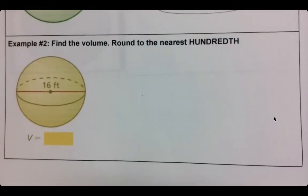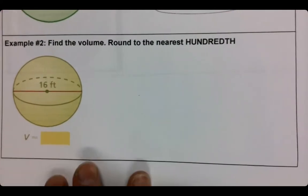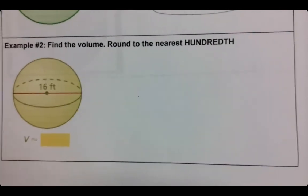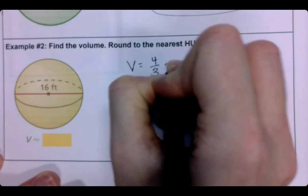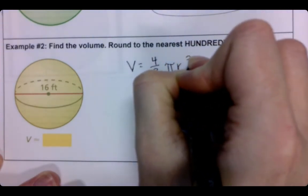All right, so now we're on the bottom. Same thing. We always want to start with, what is our formula? V equals 4/3 π r³.